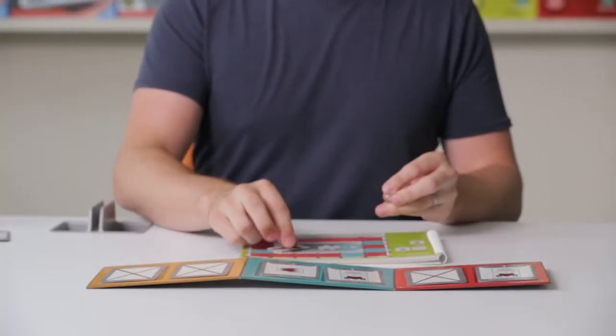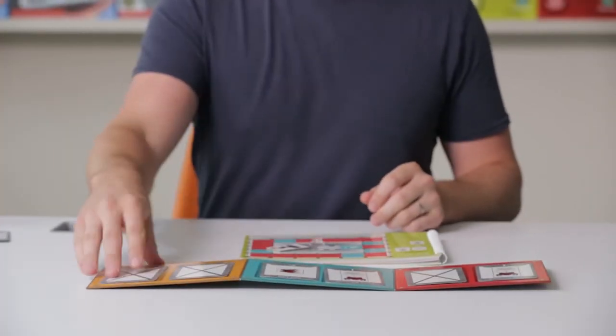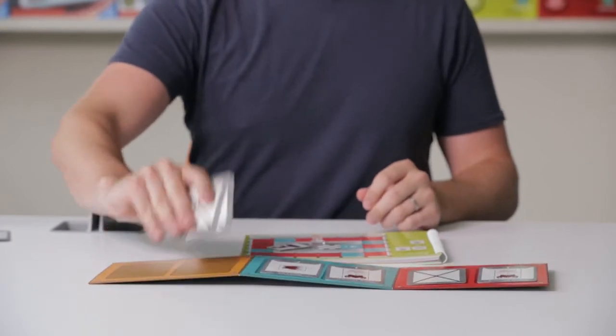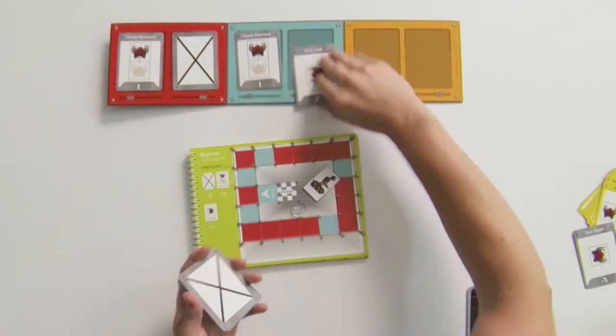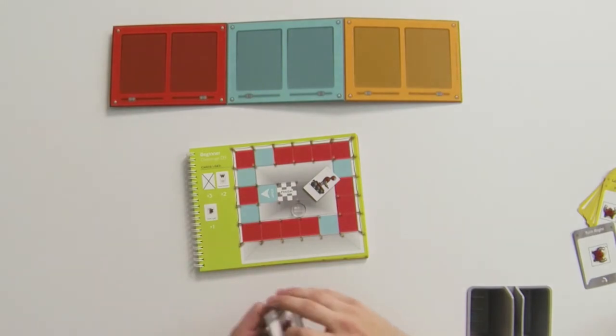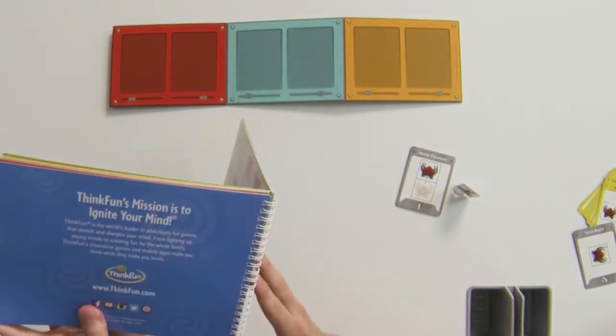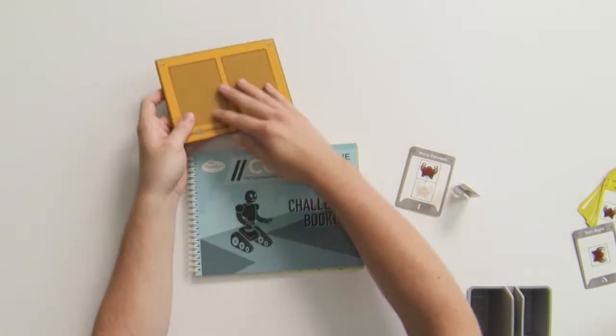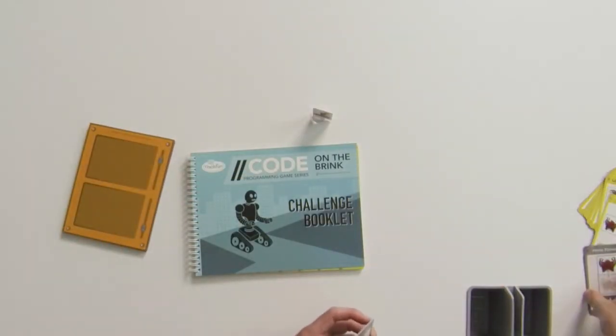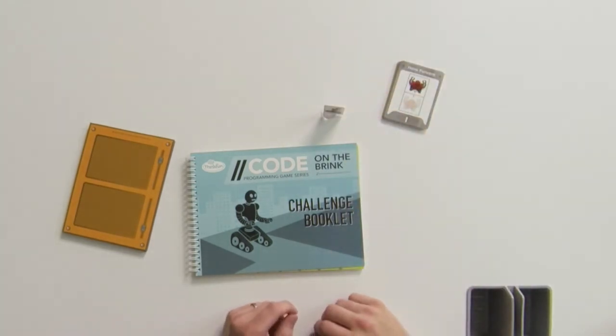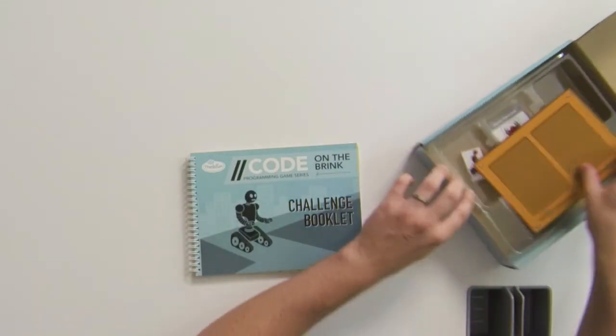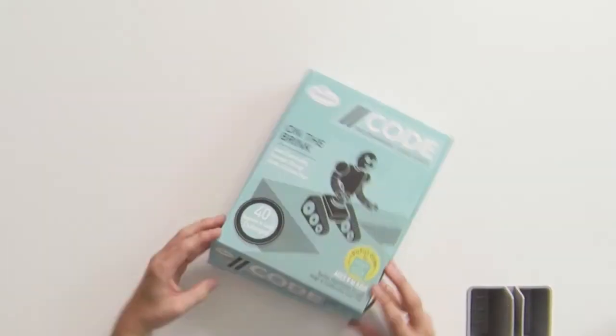On the Brink along with our other two new coding games robot repair and rover control was invented by Mark Engelberg. Mark is a game inventor who used to be a virtual reality programmer at NASA and then spent time designing video games and since then has been an educator and game inventor for ThinkFun for many years. He created our new code series to help kids learn core coding concepts through hands-on gameplay.